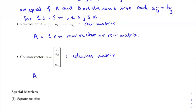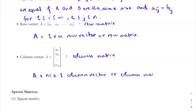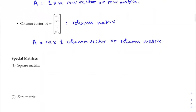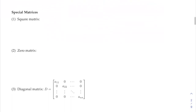A column vector has just one column but multiple rows — that's why it's called a column matrix. In this case, A is an m-by-1 column vector or column matrix. There are some other special matrices you may want to know, particularly for linear algebra. The first one is the square matrix.